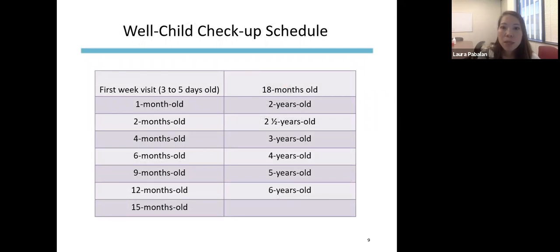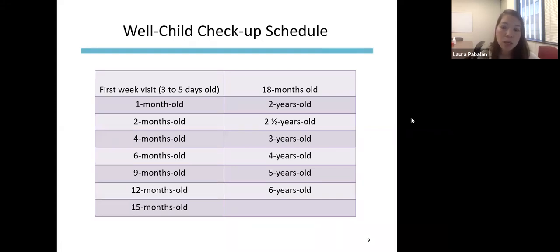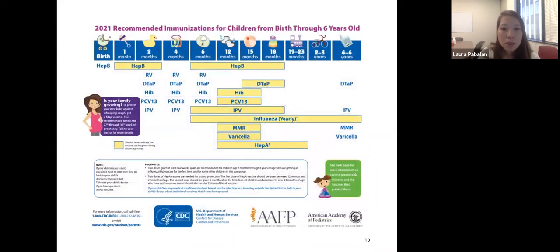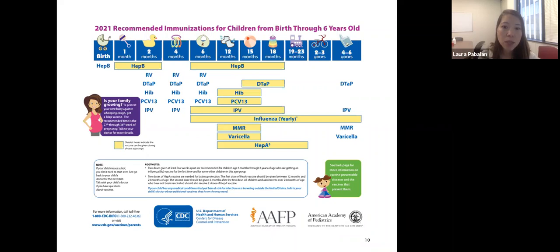This is the typical well-child checkup schedule recommended by the American Academy of Pediatrics. Visits are pretty frequent until about age three, then usually annually after that unless there are issues to follow up on sooner. Children affected by homelessness are more likely to be behind on recommended vaccinations. If a younger child hasn't been to their healthcare provider in quite some time, they could potentially be behind on multiple immunizations.